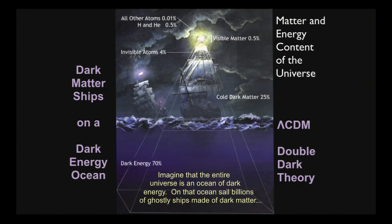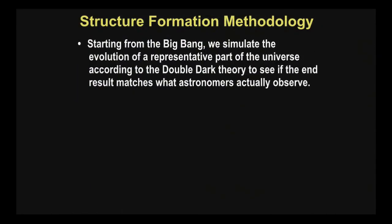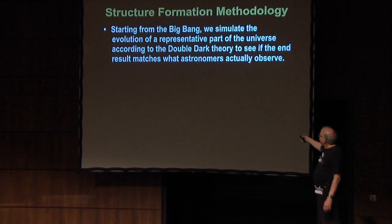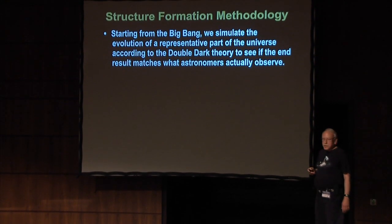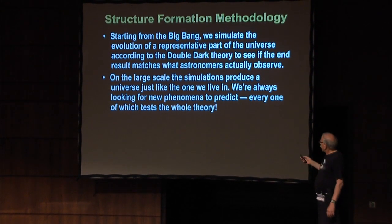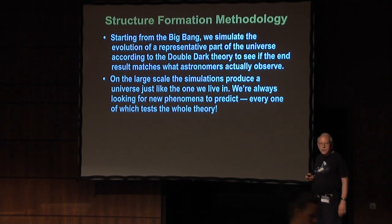This is a bizarre story, as Ofer Lahav and others have emphasized. We start from the Big Bang, we simulate the evolution of a representative part of the universe according to the double dark theory — the theory that says it's mostly dark matter and dark energy — and we see if the result matches what the observers see. The simulations on the large scale are fantastically successful. I keep personally being amazed, and I do them.